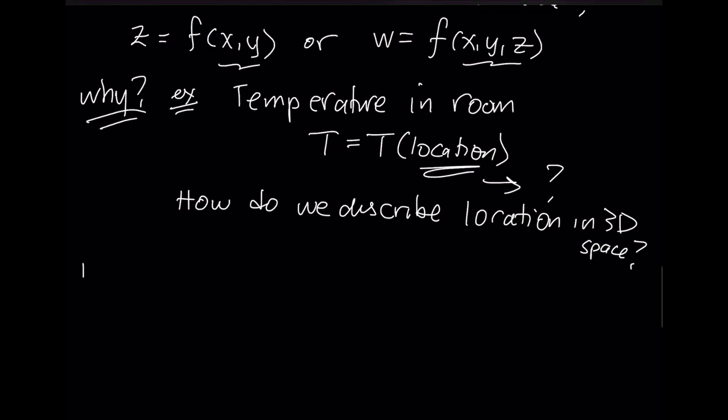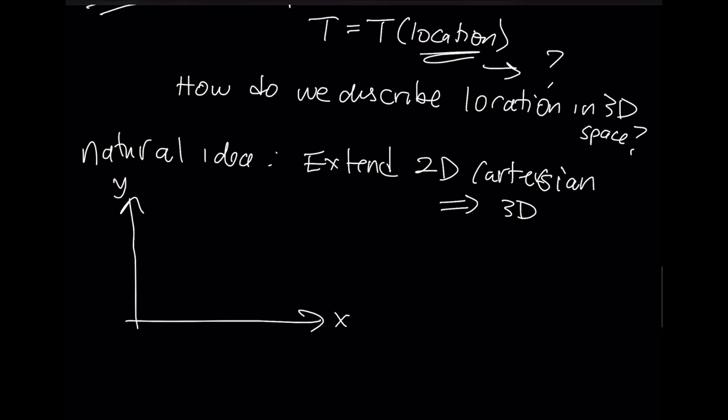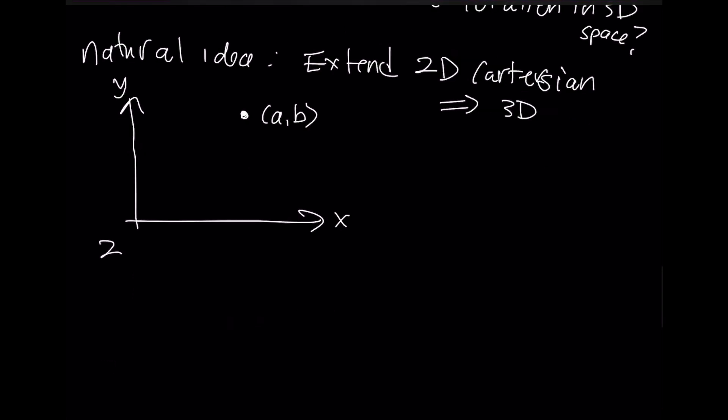A very natural idea is for us to extend our 2D Cartesian coordinates into 3D. Cartesian coordinates are a set of perpendicular axes. Here's a point in this two-dimensional plane. We call it a 2D plane. When you give the coordinates of a point like this as A and B, the first value tells you how far along the x direction you are. The second one tells you how far along the y direction you are.